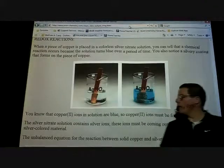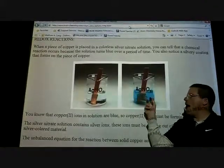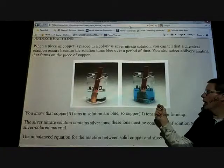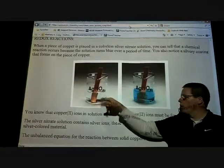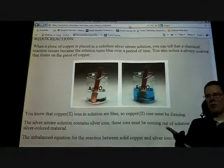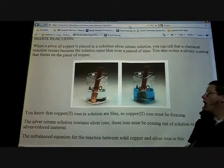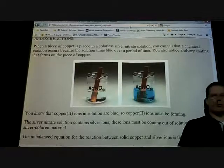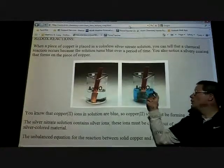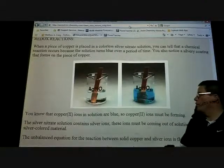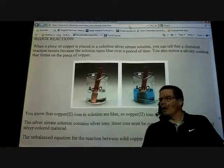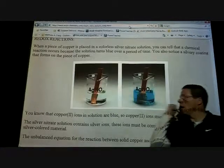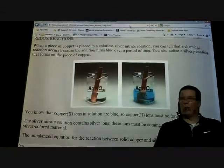We haven't talked about aqueous yet — now's the time. When a copper atom is surrounded by water molecules, it's an ion, a charged particle. Some metals make the solution blue. Last time we looked at nickel ions — what color was that? Green. And silver ions? Transparent — they don't give off a color. A lot of metals also make the solution clear.